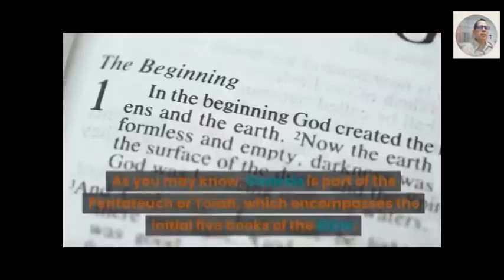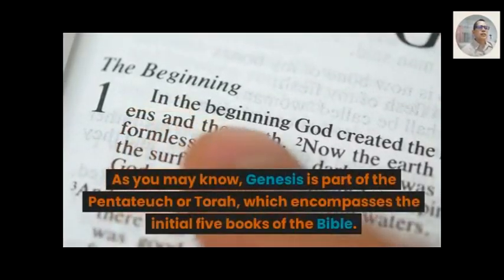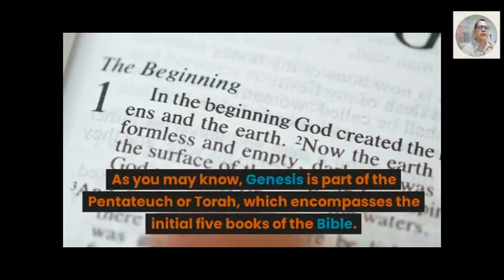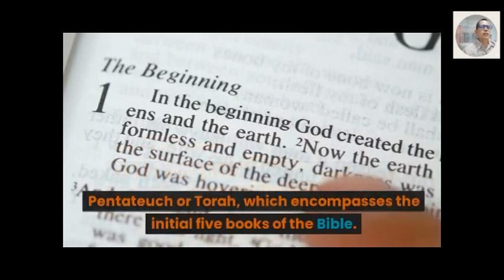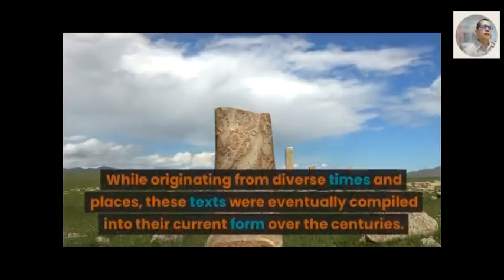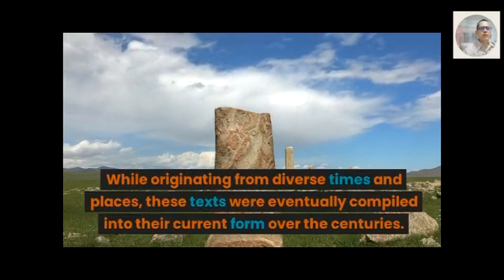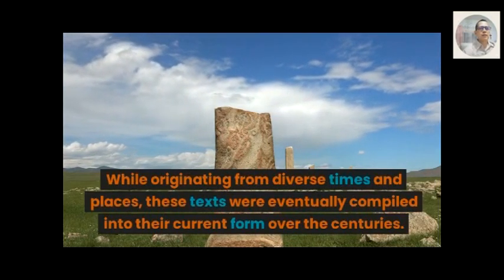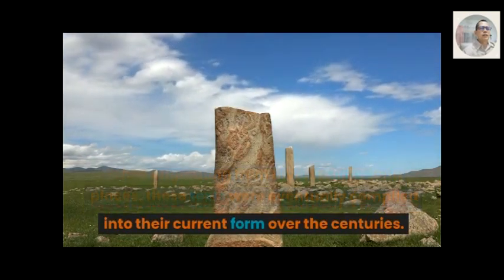As you may know, Genesis is part of the Pentateuch or Torah, which encompasses the initial five books of the Bible. While originating from diverse times and places, the texts were eventually compiled into their current form over the centuries.